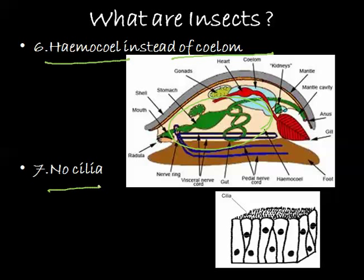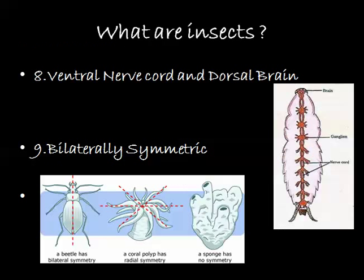Another characteristic is that no cilia are present — the surface of the body doesn't have any cilia, which is an important characteristic of this phylum. The other characteristics are the presence of a ventral nerve cord and the dorsal brain.